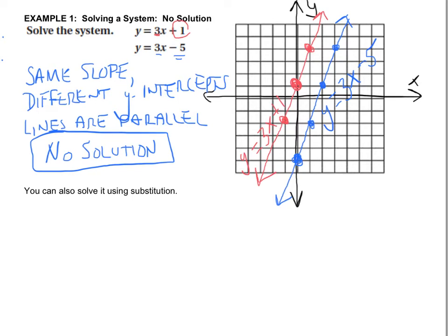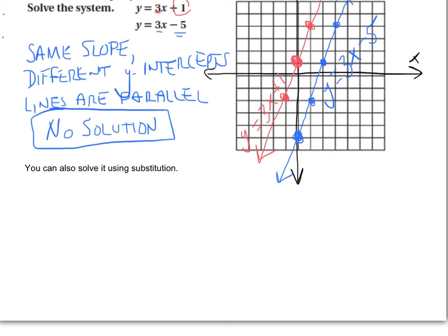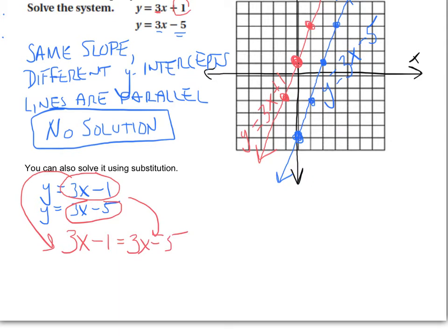So I can also, somebody else might come along and say, you know what, I want to solve this system by substitution. So we're going to solve it by substitution. We're not going to have a graph to be able to say that these lines are parallel. But if you remember, from the substitution method, we had y equals 3x plus 1, y equals 3x minus 5. Remember, we solved one equation for a variable. These both happen to be solved for a variable. And if y equals 3x plus 1, and y also equals 3x minus 5, what we can do is take this equation and make it equal to this equation.